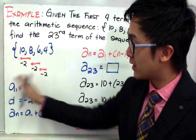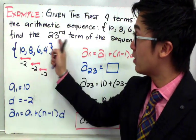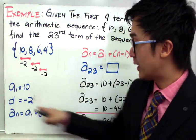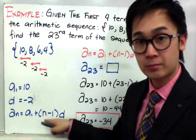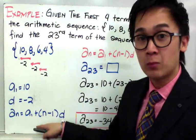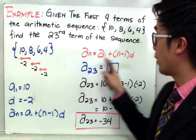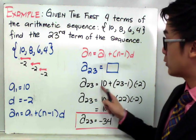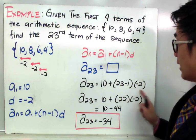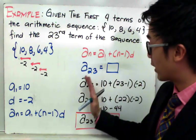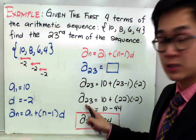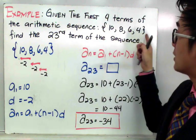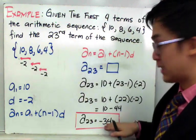Using these variables, we can find the 23rd term by applying the formula. By direct substitution with a sub 1 equals 10, d equals negative 2, and n equals 23, we get a sub 23 equals 10 plus the quantity 23 minus 1 times negative 2. Simplifying, we find a sub 23 equals negative 34. So the 23rd term of this arithmetic sequence, given 10, 8, 6, and 4, is negative 34.